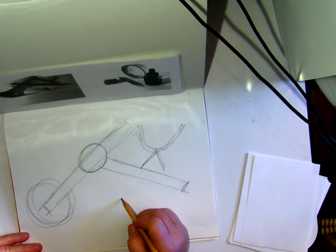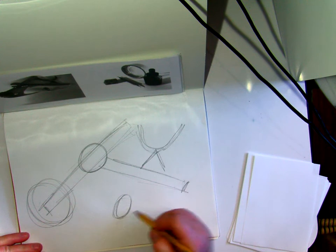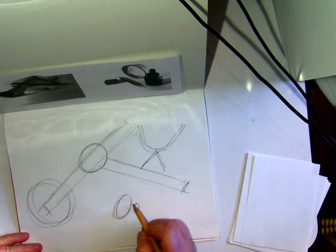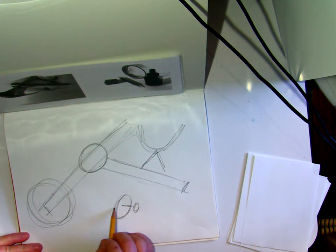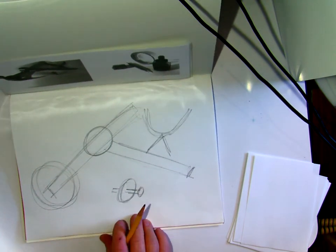Then we got the nut and the bolt right here. So this is a circle. I've got a little circle right here. And then it is basically a rectangle that goes through them. Okay, very quick sketch.